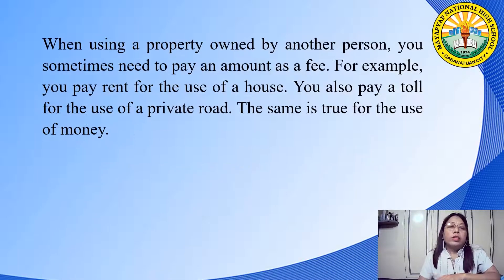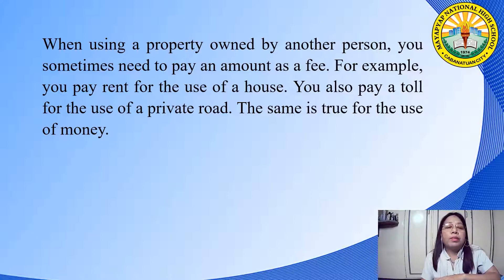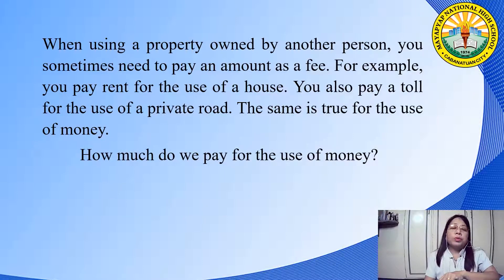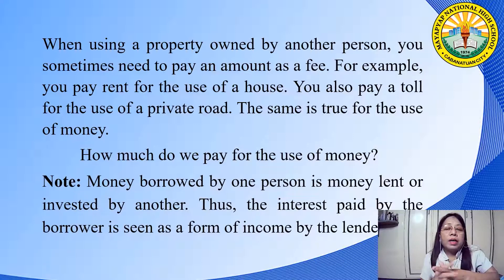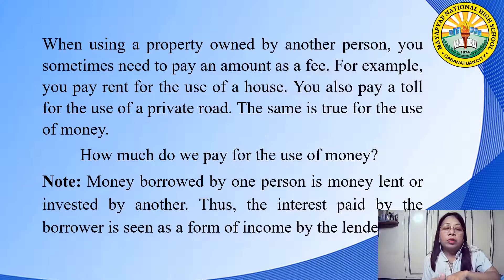When using a property owned by another person, you sometimes need to pay an amount as a fee. For example, you pay rent for the use of a house, or a toll for the use of a private road. The same is true for the use of money. Note that money borrowed from one person is money lent or invested by another. Thus, the interest paid by the borrower is seen as a form of income by the lender.